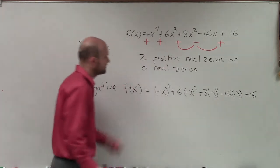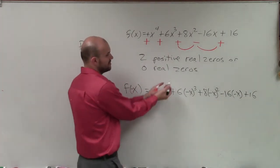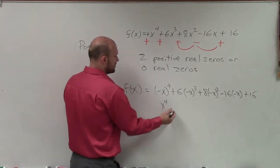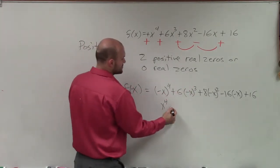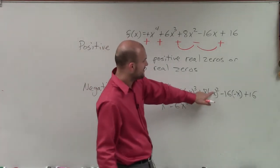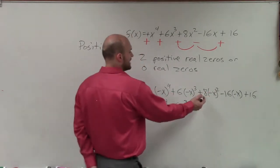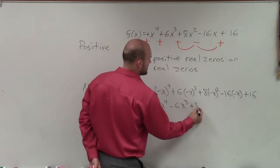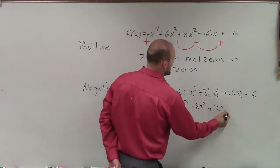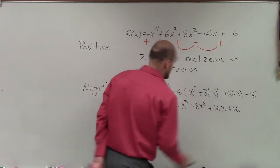Now we evaluate. When we take a negative number and raise it to an even power, that's still positive x^4. Negative x cubed becomes negative, so negative times 6 becomes negative 6x^3. Negative x squared is positive, so 8x^2 is positive 8x^2. This becomes positive 16x plus 16.